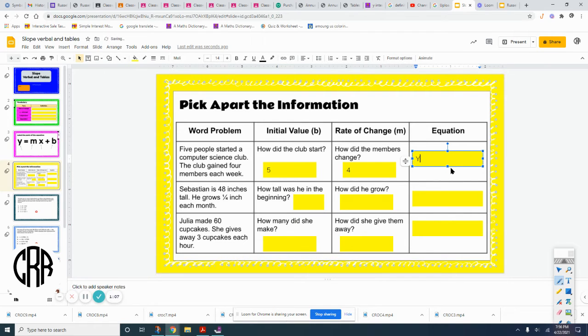So of course we start our equation with y equals - caps lock was on - four members each week plus the five that they started with.